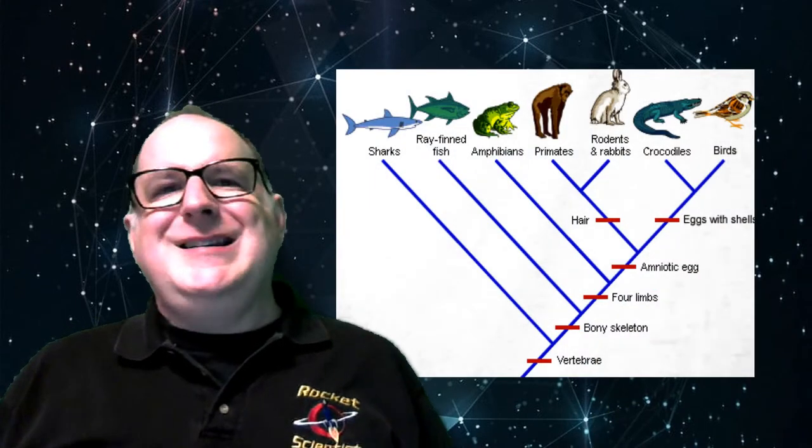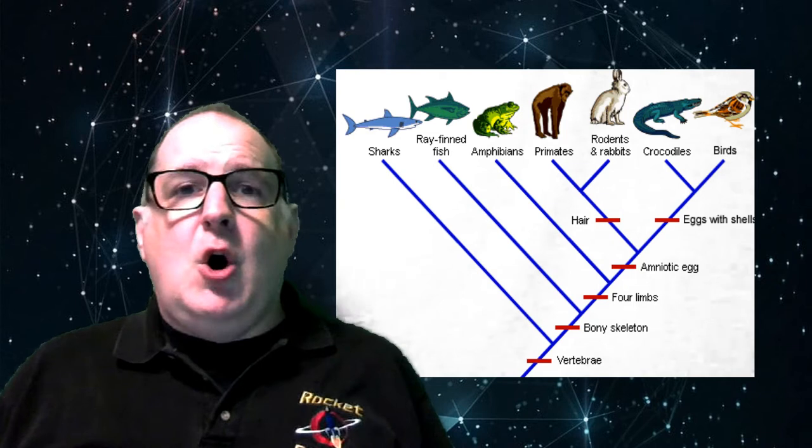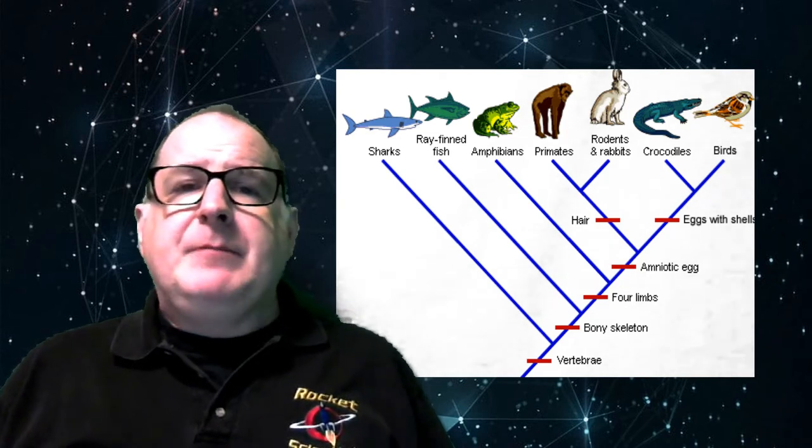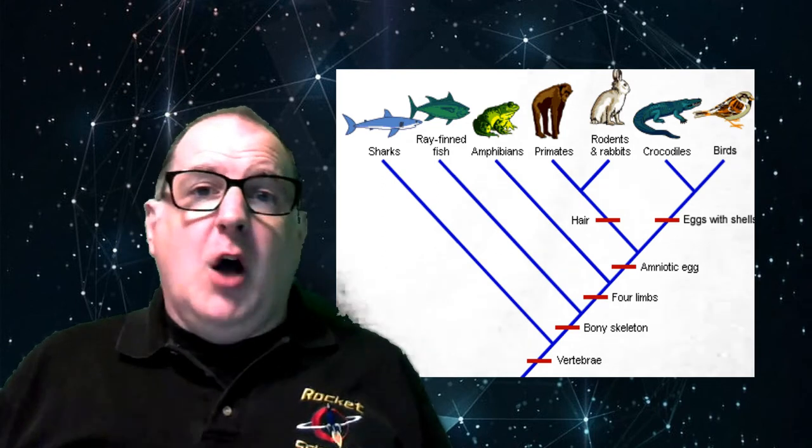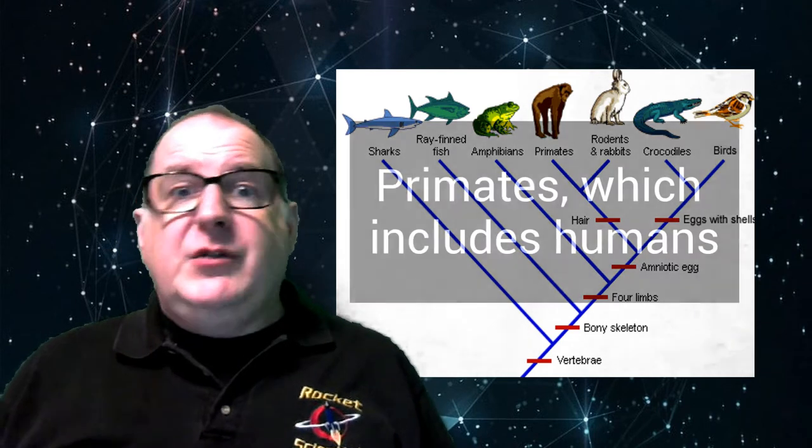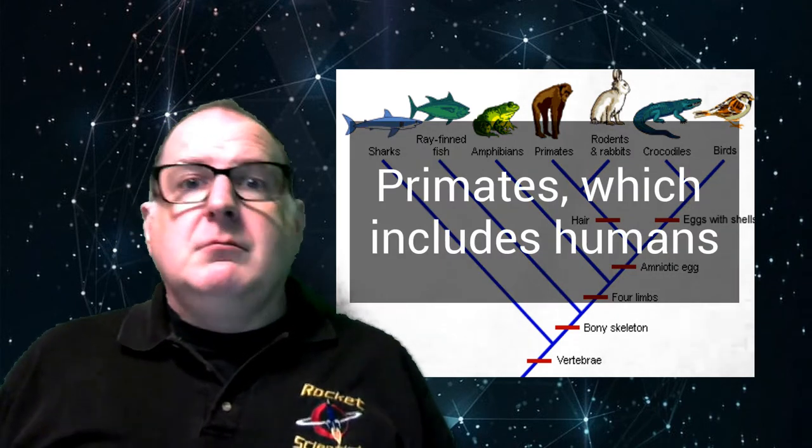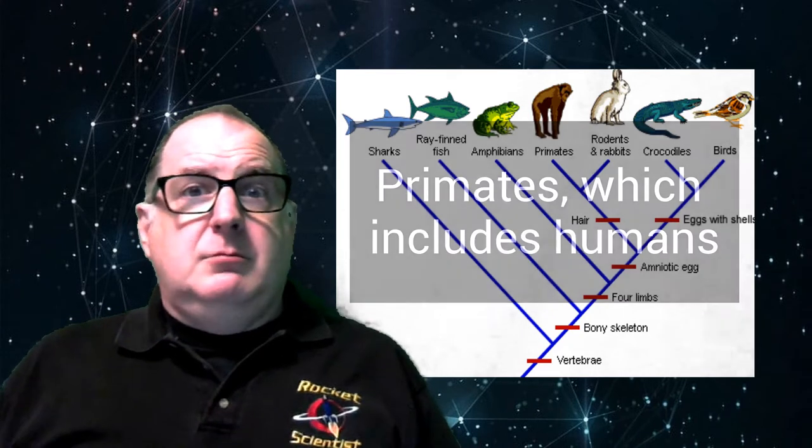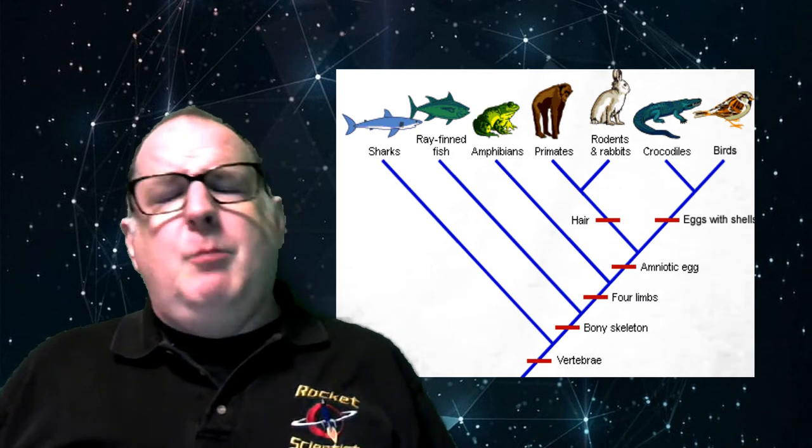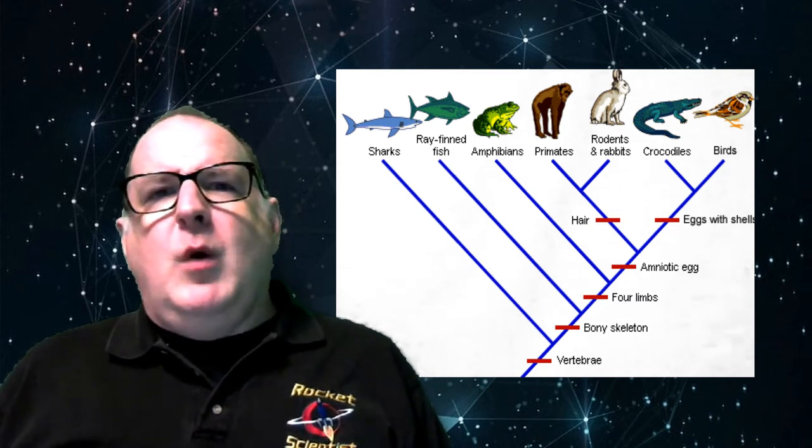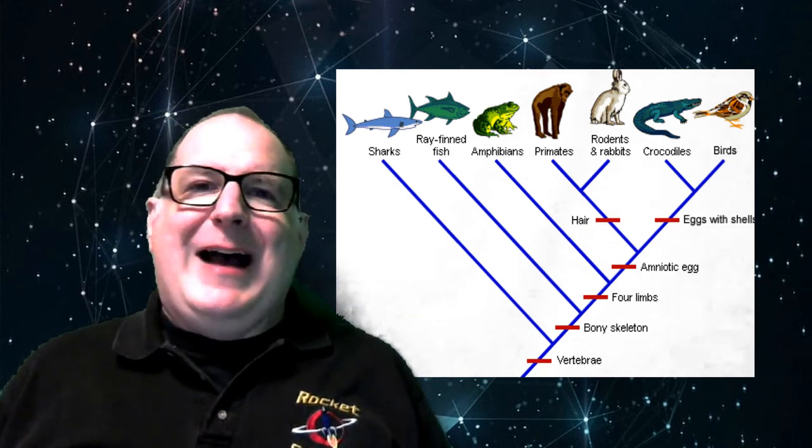Now this one is a fairly small cladogram. It shows sharks, fish, frogs, humans, and some birds. And remember, birds are the leftover dinosaurs.